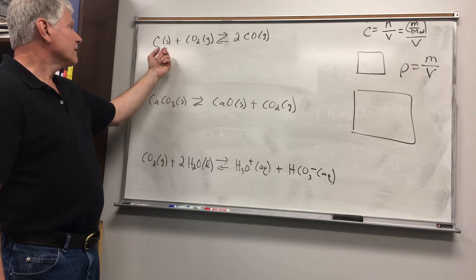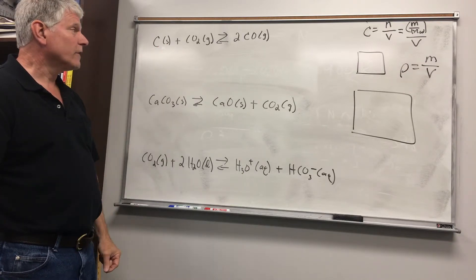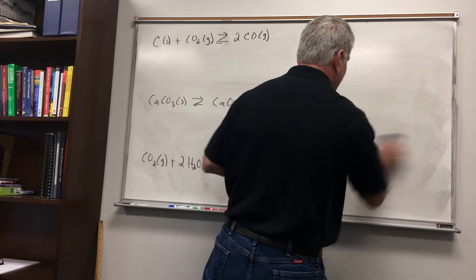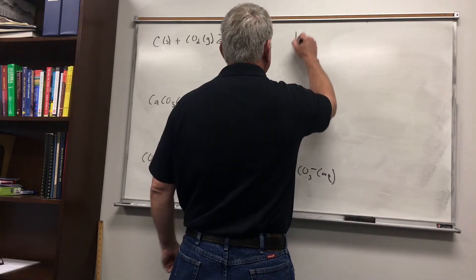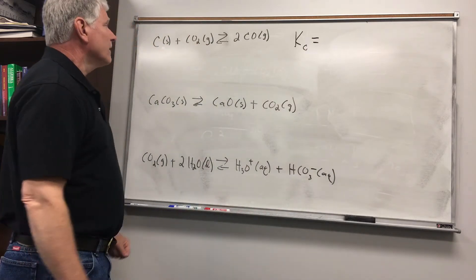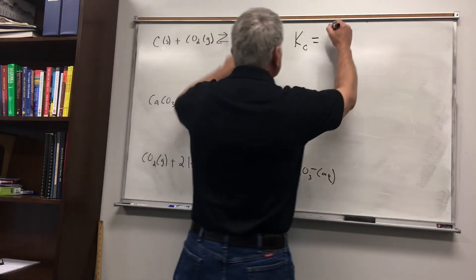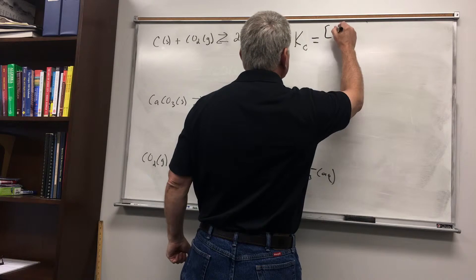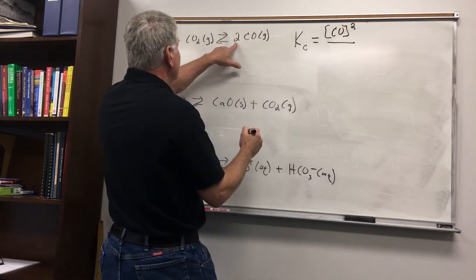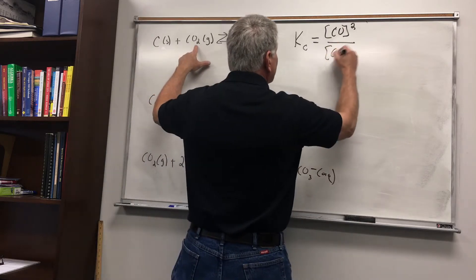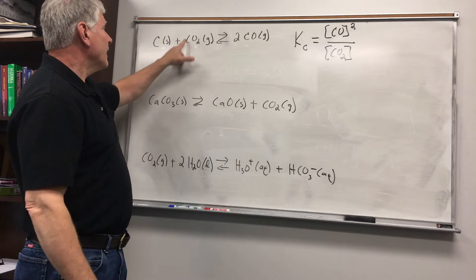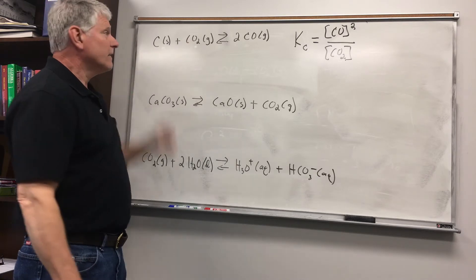We would neglect the solid carbon here. So the equilibrium constant for this reaction, written in terms of concentration, is equal to the concentration of the product carbon monoxide squared, divided by the concentration of the reactant carbon dioxide to the first power. The solid is left out.